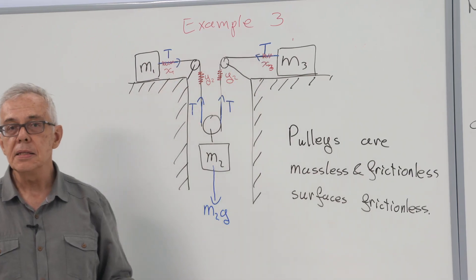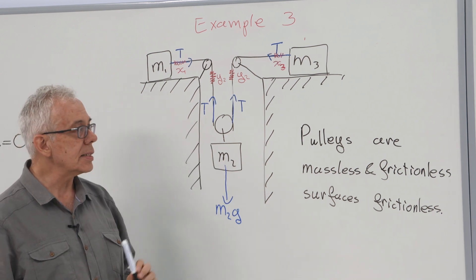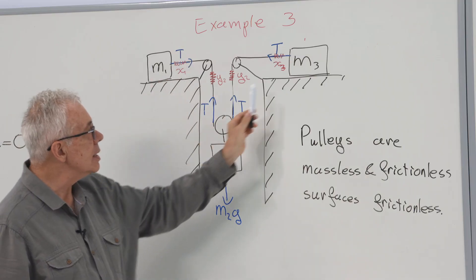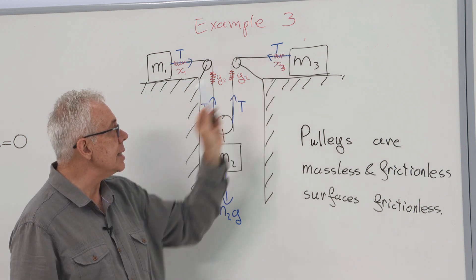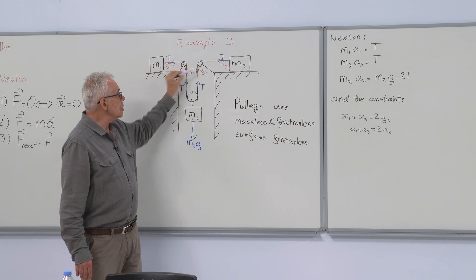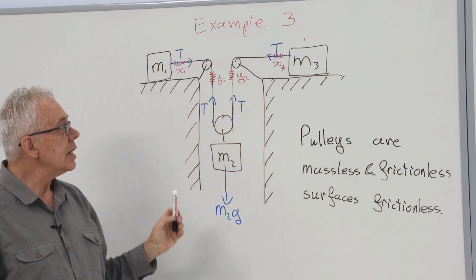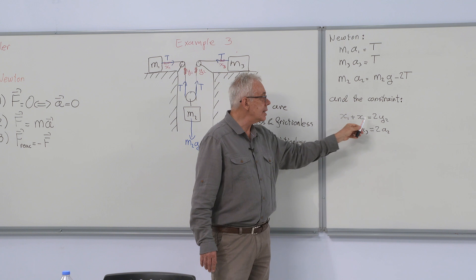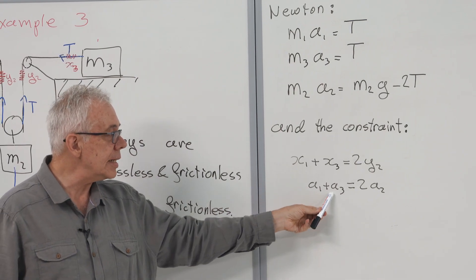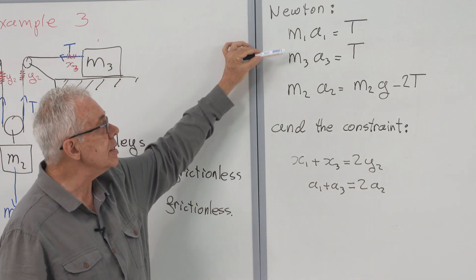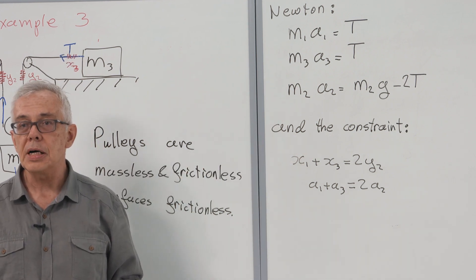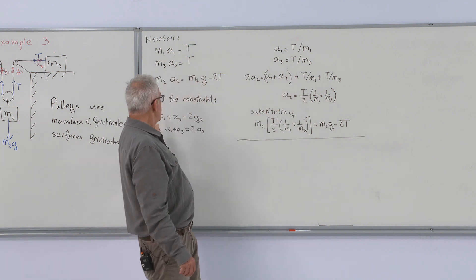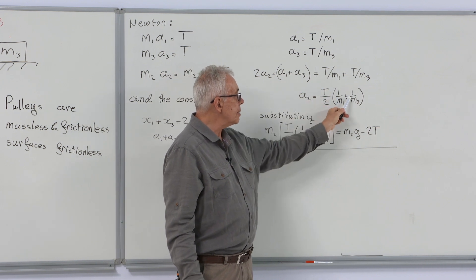The length of the string is constant, and that constrains the accelerations. If the first mass is moved by a distance x1, it shortens the string by x1. Moving this by x3 shortens it by x3. Similarly, the two vertical strings are lengthened by y2 each. As a result, the shortening here and the lengthening here must be equal. x1 plus x3 is equal to 2y2, and therefore, a1 plus a3 is equal to 2a2. Now, I have one, two, three, four equations for my four unknowns. From these two, I see that a1 is T over m1, a3 is T over m3, and 2a2 is a1 plus a3, which is T over 2, 1 over m1 plus 1 over m3.